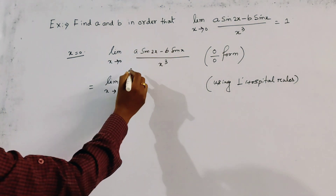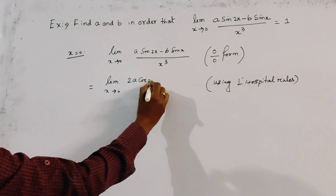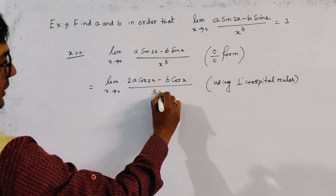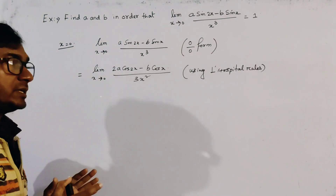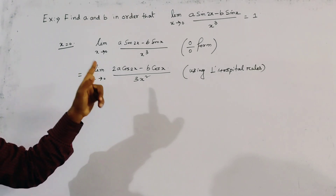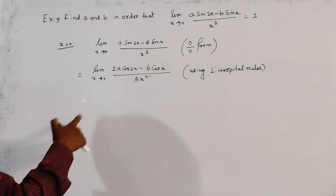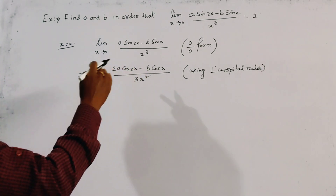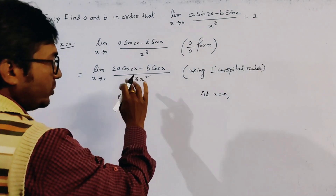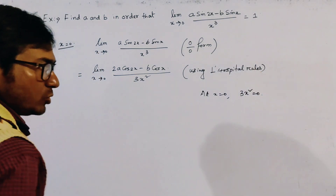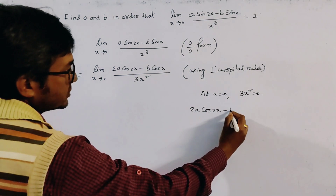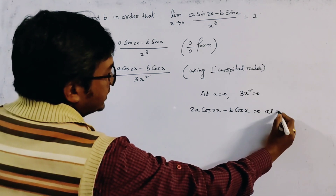Using L'Hôpital's rule, we differentiate the numerator and denominator. The result is: (2A cos 2x minus B cos x) divided by 3x squared. Since the limiting value must exist and equals 1, and the denominator is still 0 at x = 0, the numerator must also equal 0 at x = 0. So 2A cos 2x minus B cos x equals 0 at x = 0.